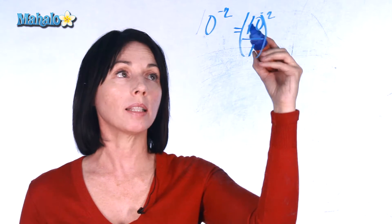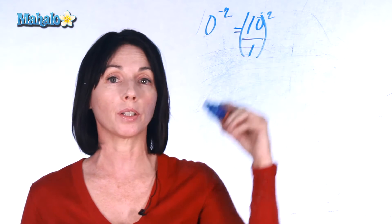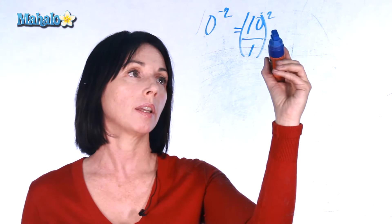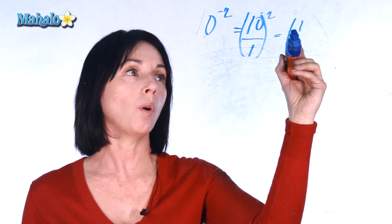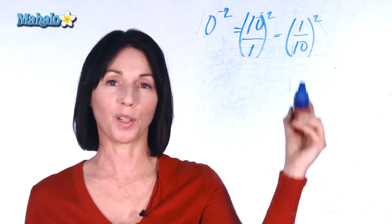Now to make our exponent positive I need to take the reciprocal here, so I need to flip it upside down. So that means I actually have 1 over 10 to the power of 2.